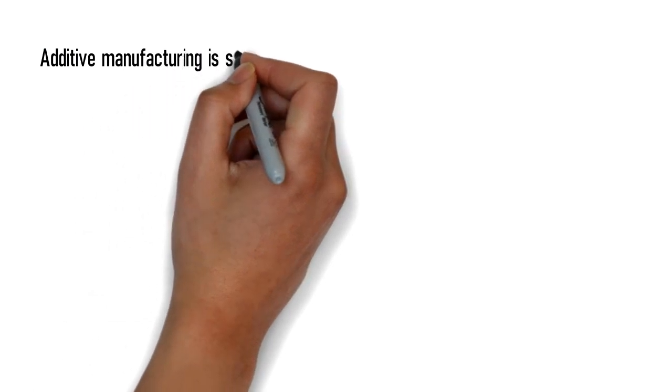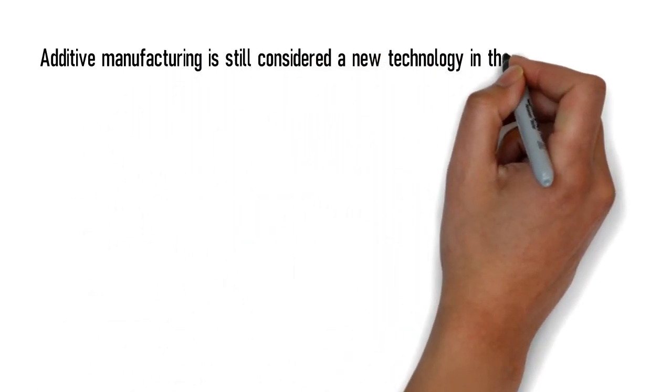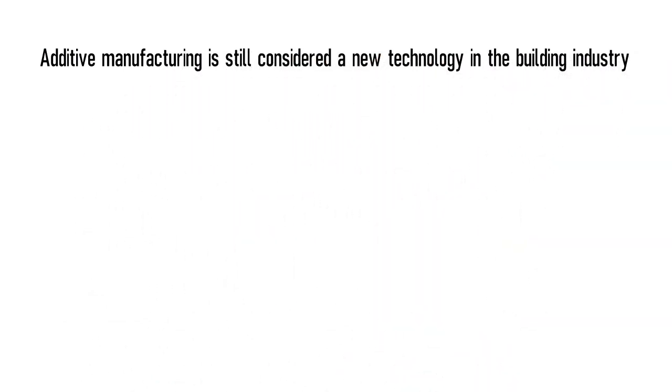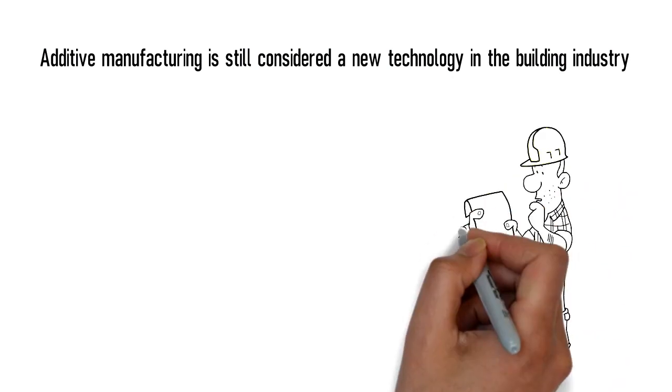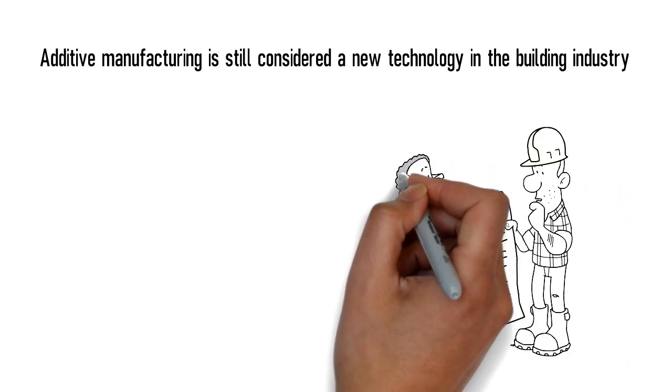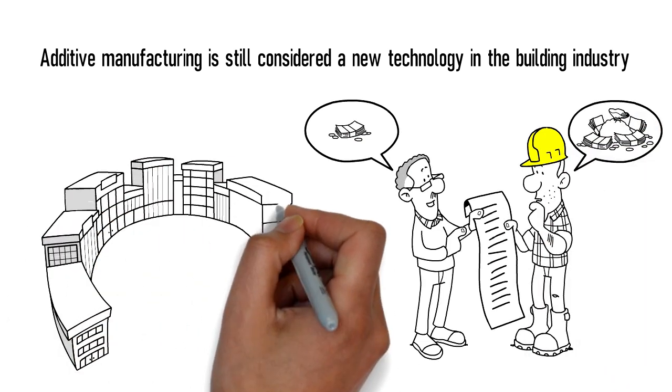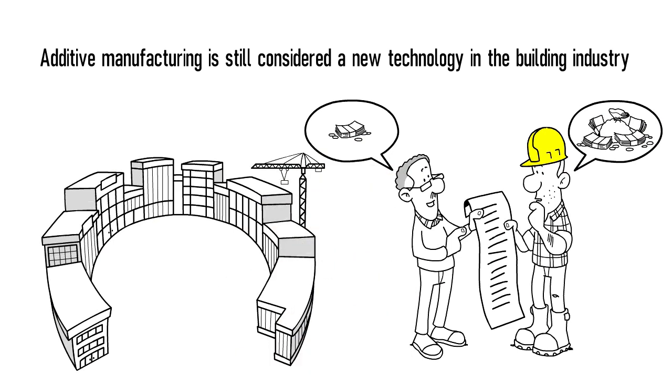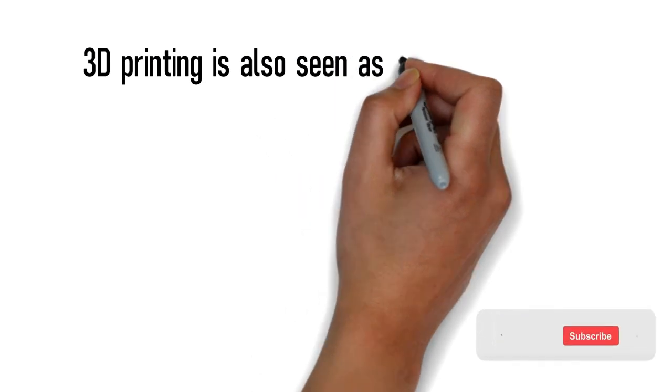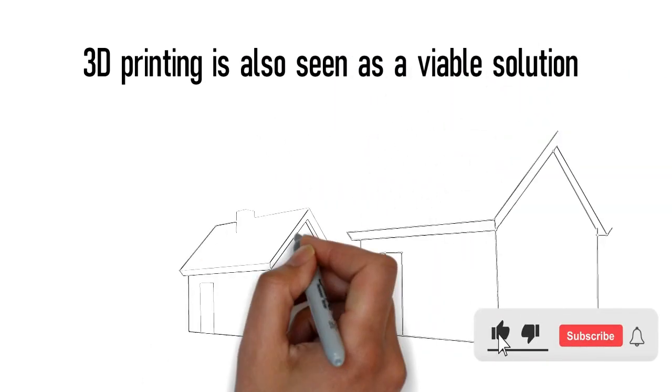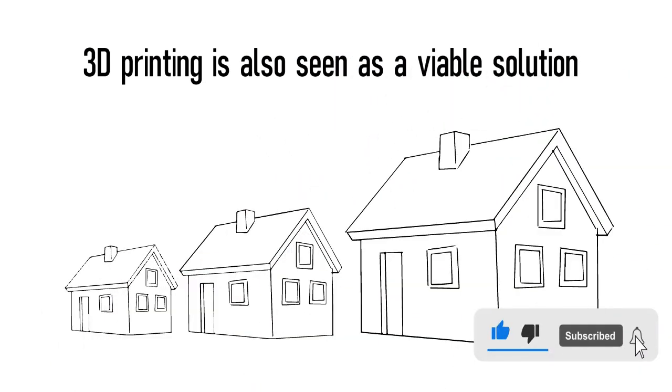Additive manufacturing is still considered a new technology in the building industry. Nonetheless, it has already demonstrated significant potential in terms of cutting costs and speeding up construction. Some printers can even build a whole structure from the ground up in less than a day and for a fraction of the cost of traditional building methods. 3D printing is also seen as a viable solution to humanitarian problems such as the worldwide housing crisis.